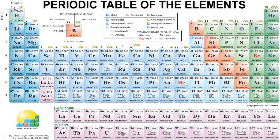Group 1 runs from hydrogen to francium; except hydrogen, lithium to francium are all metals, so Group 1 is called alkali metals. Group 2, beryllium to radium, are called alkaline earth metals. Groups 3 to 12 are called transition metals. Group 13 is the boron family, Group 14 the carbon family, Group 15 the nitrogen family, Group 16 the oxygen family or chalcogen family. Group 17 is called halogens — fluorine, chlorine, bromine, iodine. Group 18 is called inert gases or noble gases — helium, neon, argon, krypton, xenon, radon.